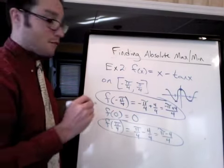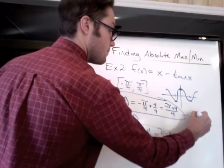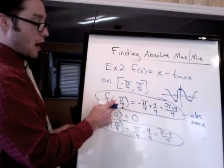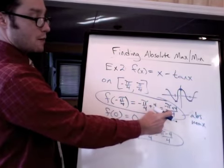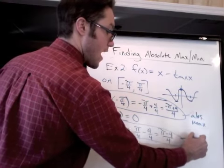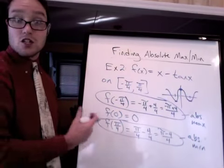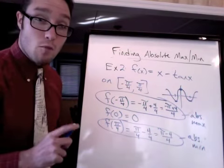So that means that I have an absolute max at this point. Negative pi over 4 comma negative pi plus 4 over 4. And this point here is an absolute minimum. And I'm done. I just write a conclusion. Let's try one more.